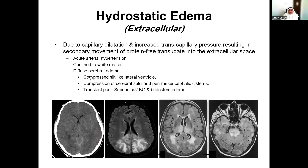The fourth and final type is hydrostatic edema, which is also extracellular. It is due to capillary dilatation and increased transcapillary pressure, resulting in transudate movement — fluid that is not protein-bound — moving from the intravascular to the extravascular space. It usually occurs in cases of acute and severe arterial hypertension, such as eclampsia and preeclampsia, resulting in posterior reversible encephalopathy syndrome. It is a reversible subcortical edema occurring in the white matter, but may also occur in the gray matter — as seen here in the basal ganglia and thalami — and is patchy and bilateral in distribution.